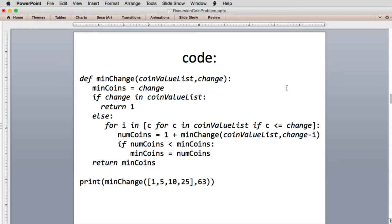So here's the code. We have an array called the coin value list, which has a list of the coins in our country that we can use. We have the change we want to make. So this is the recursive routine. We start out by storing the change in the minimum number of coins, called min coins. If the change value is actually in the coin value list, we're done. We found that we can use one coin, and we just return the value one.